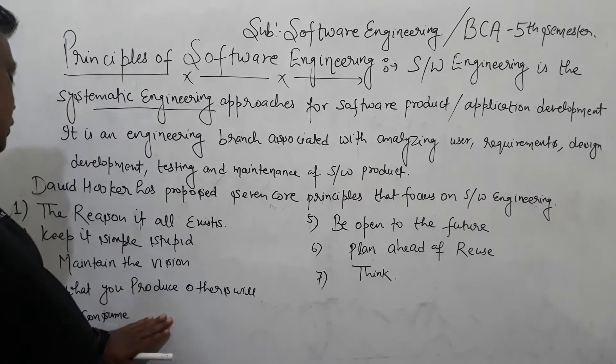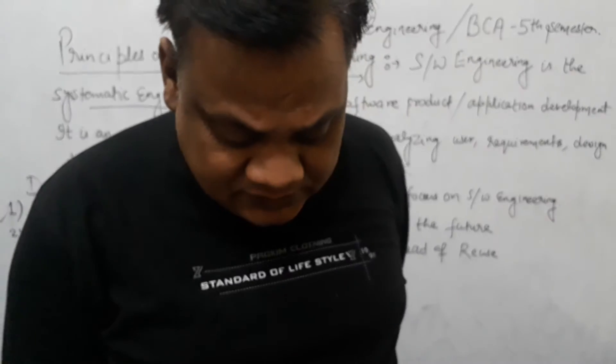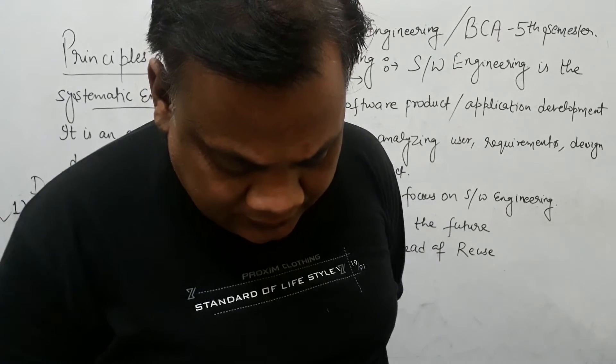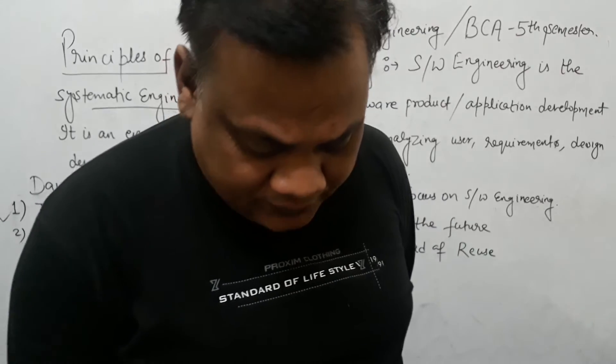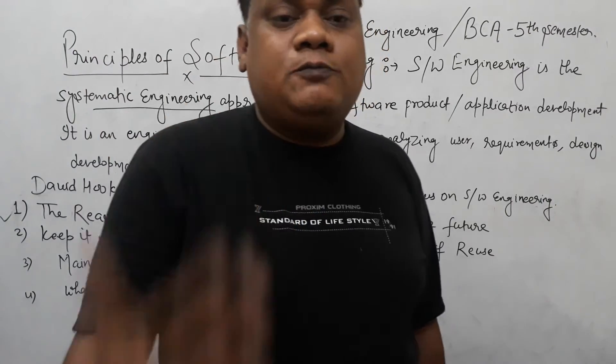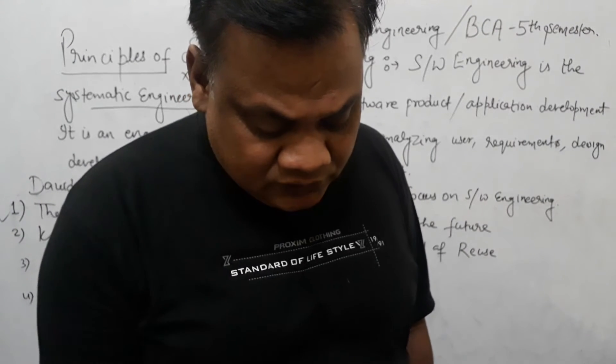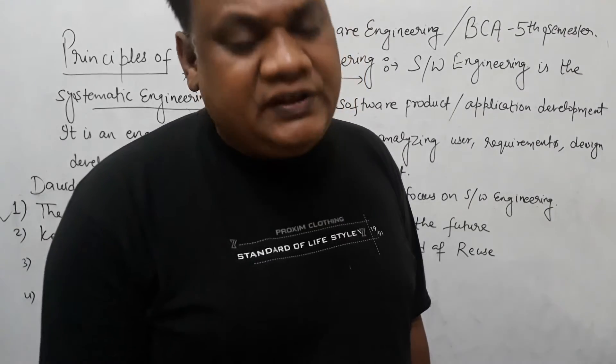What you produce, others will consume. This is most important. Industrial software systems are not constructed in a vacuum. In some way, someone will use, maintain, and document it. Others will depend on being able to understand your system. So always specify, design, and implement knowing that someone else will have to understand what you are doing. Always specify, design, and implement so that someone else can understand what we are doing.